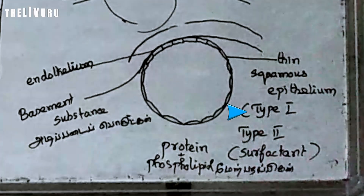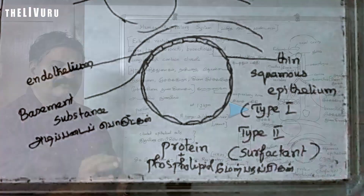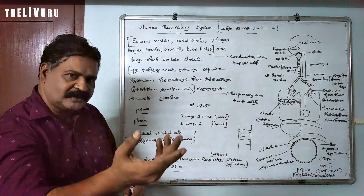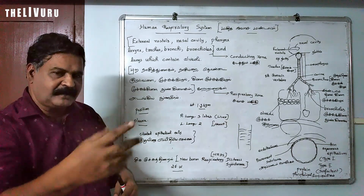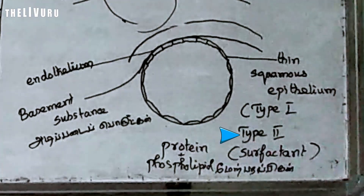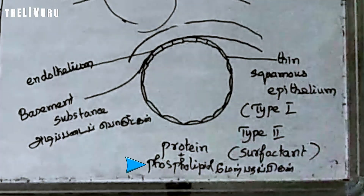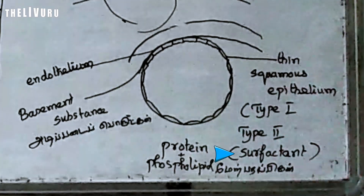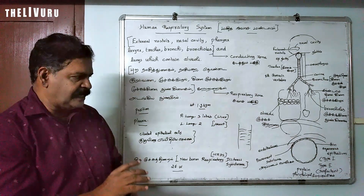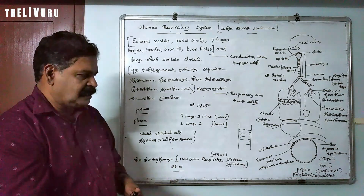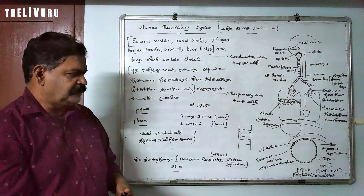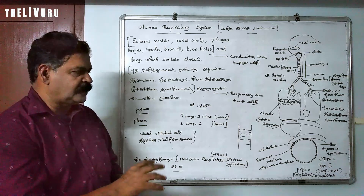The wall of the alveoli is made up of two types of cells: Type 1 and Type 2. Type 1 cells are very thin in nature and form the majority of the alveolar surface. Type 2 cells produce a substance made up of protein and phospholipid known as surfactant.